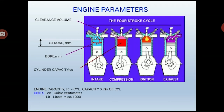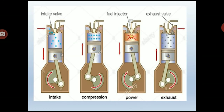In a four-stroke engine, we have four cycles: suction, compression, power, and exhaust stroke. During the suction stroke, the piston moves from TDC to BDC. The intake valve opens to allow air from the atmosphere into the engine cylinder. The motion of the intake valve is controlled by the camshaft. The exhaust valve remains closed. The downward motion of the piston creates a partial vacuum, drawing air molecules into the cylinder.